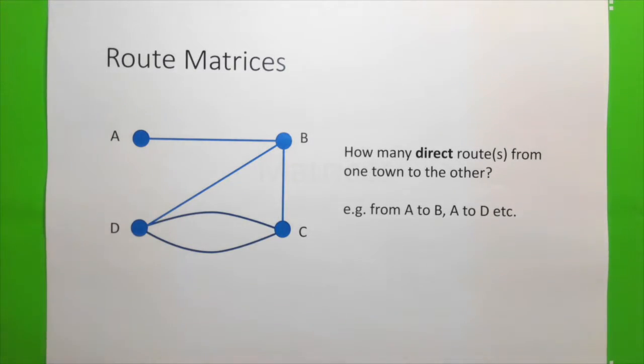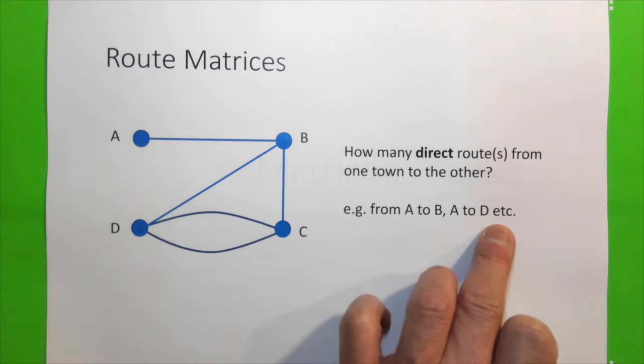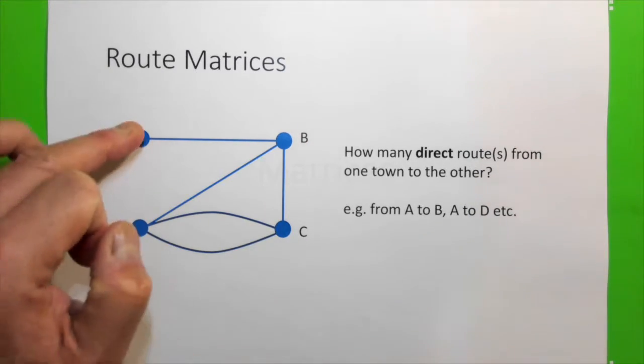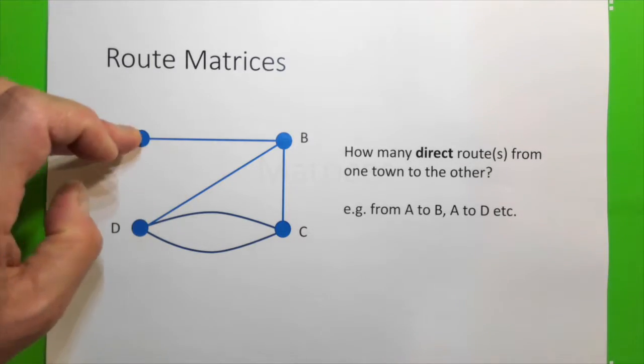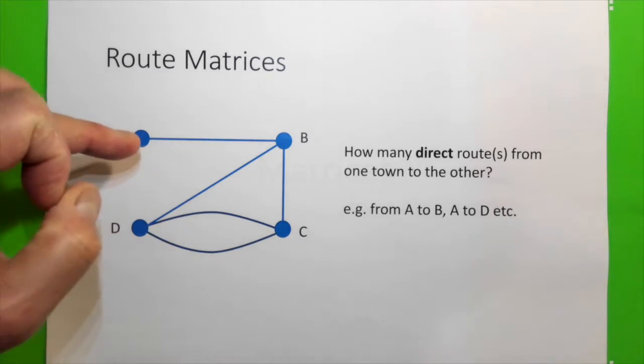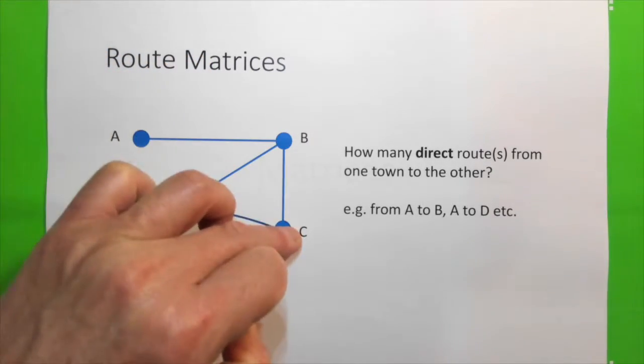We can ask ourselves how many direct routes from one town to the other. For example, from A to B, there's one direct route. What about from A to D? Is there one? In fact, there's none because there's no route connecting A to D. To go from A to D, we either go from A to B to D, or A to B to C and then to D.